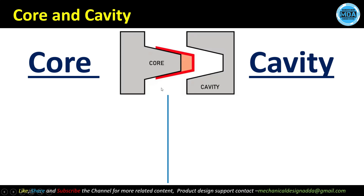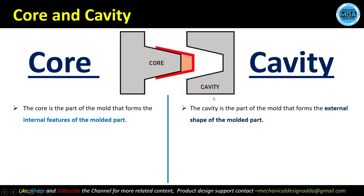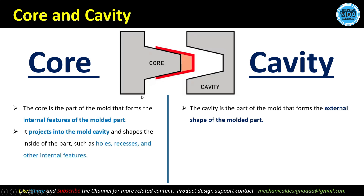Generally, core and cavity are terms used in the mold. The core side is the extended material in the mold half — this extended material is generally referred to as the core. It generally forms the internal features or the internal surface of the part. Here, the projected material is the core side of the mold.